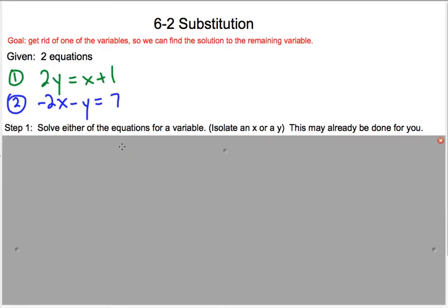When you're trying to decide which to isolate for, you want to usually pick the easiest one. You could isolate for y here, but then we'd have to divide by 2 and get some fractions, so we probably don't want to do that.